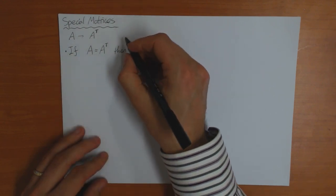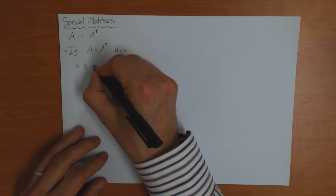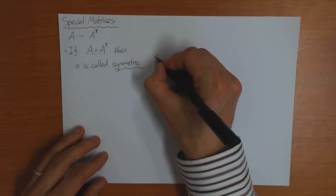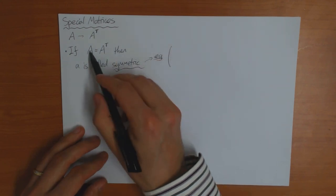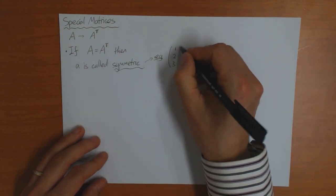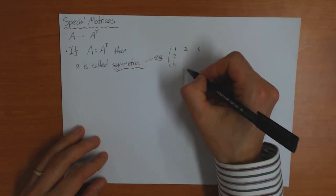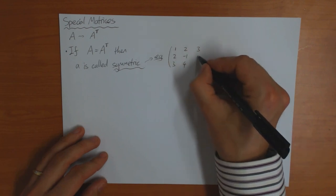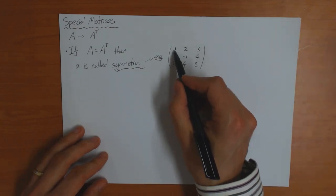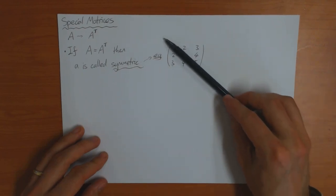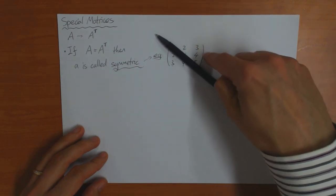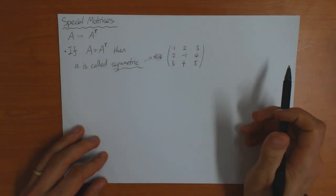If A equals A transpose, then we call the matrix symmetric. This means that the rows of A must be the same as the columns of A. For example, if I have a column 1, 2, 3, then I must have the same thing on the row. And if I have a column 2, minus 1, 4, then I must have the same thing on the row. Another way of looking at it is if you reflect along the diagonal, then the things above and below the diagonal are the same — above the diagonal I have 2, 3, 4, and below the diagonal I have 2, 3, 4.